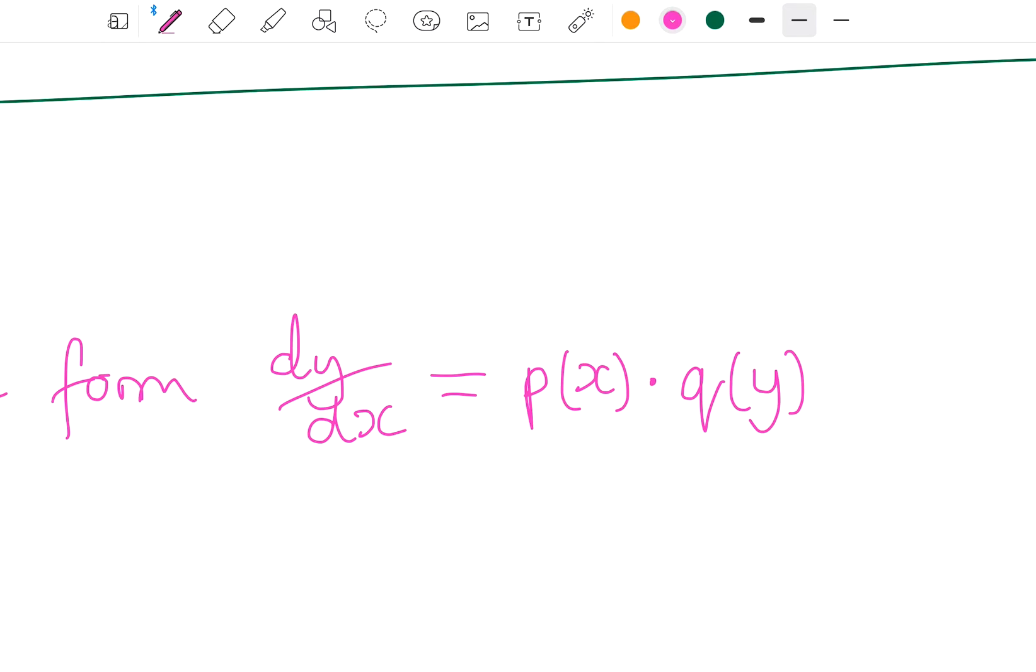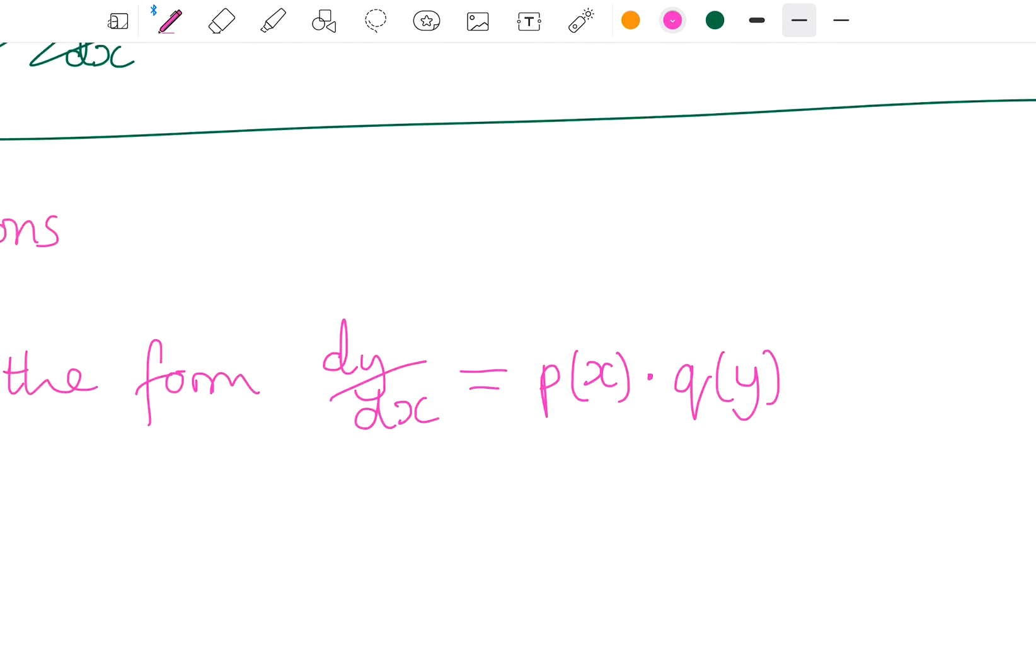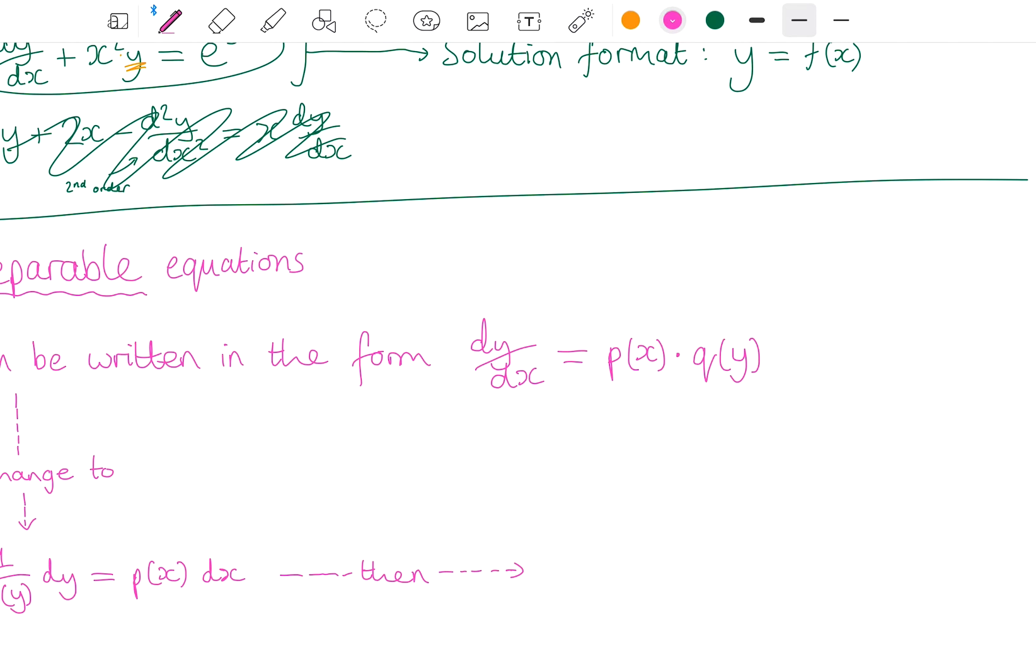So strictly in this form, we can't have plus some other x here or anything like that. Some function of x times a function of y.